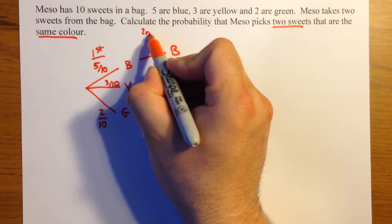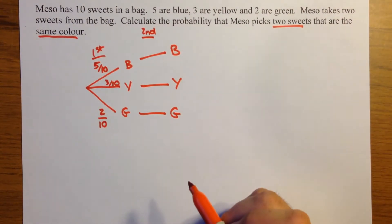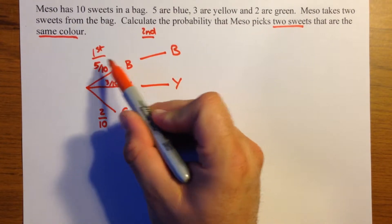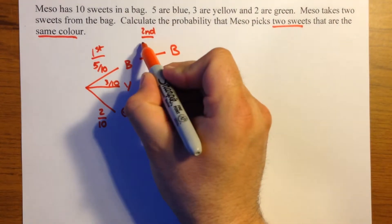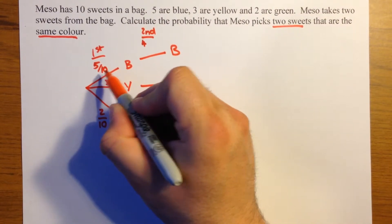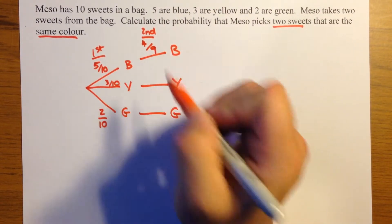Now, when you take the second sweet, this is where it gets slightly more complicated. If you've already taken a blue out of the bag, there's only four blue sweets left. And if you've already removed a sweet, there's not ten in the bag anymore, there's only nine, so this fraction is out of nine.